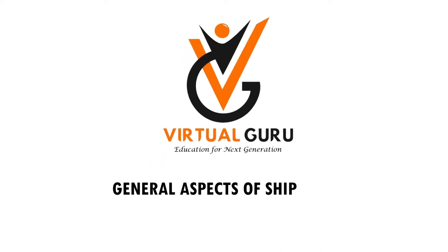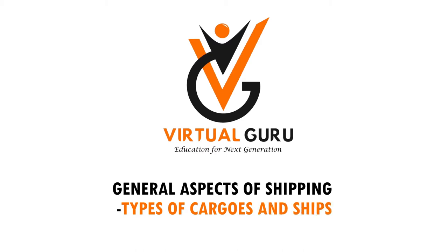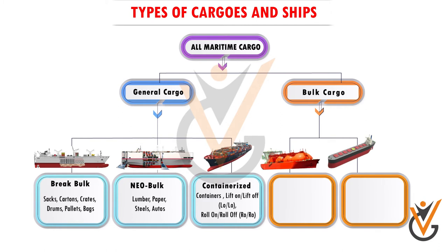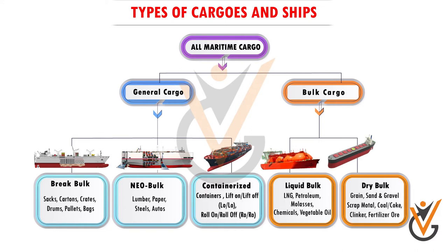This video covers general aspects of shipping, types of cargoes, and ships. Maritime cargoes are categorized basically into two: general cargo and bulk cargo. These two categories are further sub-categorized into three — break bulk, neo-bulk, and containerized/unitized — under general cargo, and into two — liquid bulk and dry bulk — under bulk cargo.